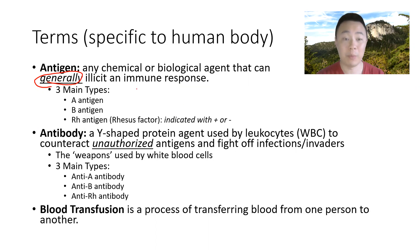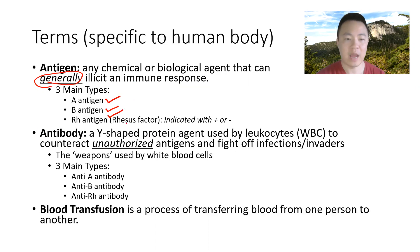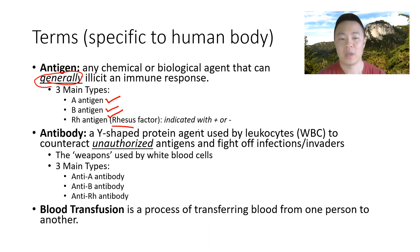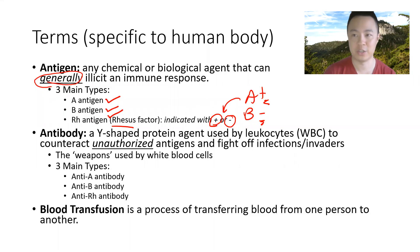When it comes to blood, there are three types of antigens. The first is the A antigen. We've got the B antigen, and we have the RH antigen. RH stands for rhesus, and it's indicated by a positive or negative — like A positive or B negative. That positive or negative is talking about that third RH antigen.